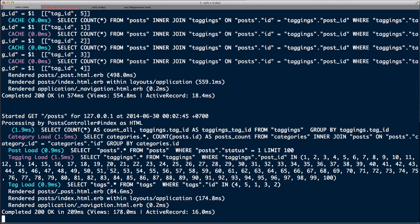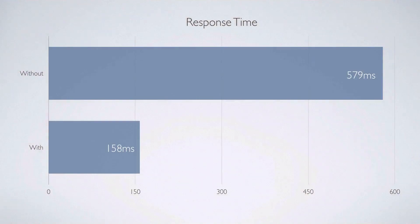Is there a better solution? Yes, we can go faster. Let's take a look at the benchmark. Without eager loading, we're averaging about 579 milliseconds. The way I do my benchmark: I reload the browser four or five times, take the last three response times, and average them. With eager loading it's 158 milliseconds — a lot faster, a significant improvement.